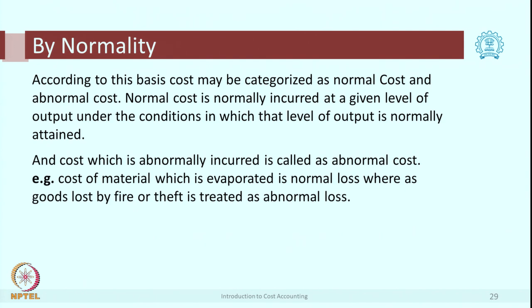The next classification is as per normality. For a certain level of output, certain costs are considered normal. But if costs exceed that level, they are considered abnormal. For example, at a petrol pump, petrol and diesel are meant to evaporate slightly. If 50,000 liters of petrol is sold in a day, it is known that 0.3 percent is likely to be evaporated — that is considered normal evaporation. Nobody will question if the loss is limited to 0.3 percent.